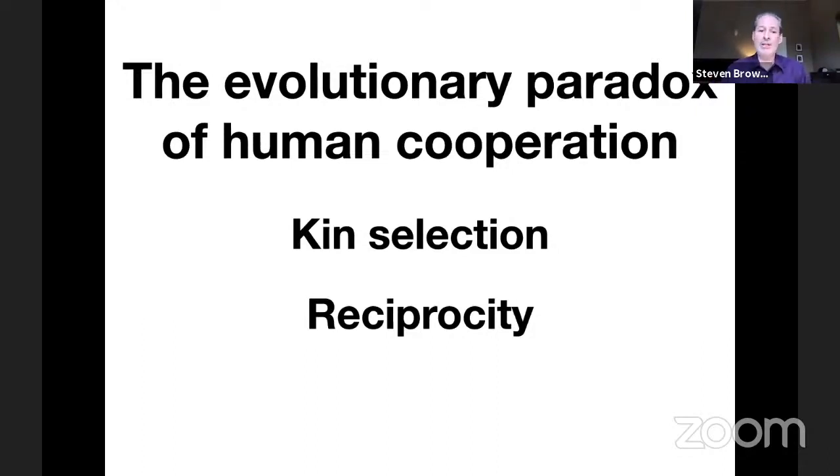The third idea, perhaps the most controversial, is called group selection. This applies to cooperation at the level of large social groups. One prominent theory is that the biggest innovation in the evolution of human cooperation is the emergence of our capacity for culture. Once we evolve the capacity for culture, it's straightforward to develop norms and rules that incentivize cooperation and punishment mechanisms that discourage defection.